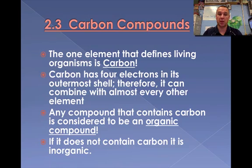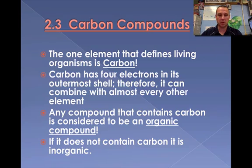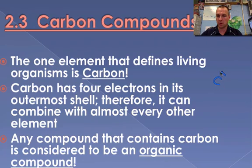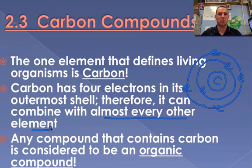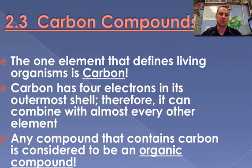First of all, let's talk about what organic means. The one element that defines a living thing is carbon. Carbon is found in every living thing, and there's a reason why it's so important. Carbon is number 6, so it has 2 electrons in its first energy level and 4 in its second energy level. This makes it able to bond with almost every element, because it can either gain 4, lose 4, or share 4 electrons to become stable. Carbon is found in every living thing, which makes it very important.